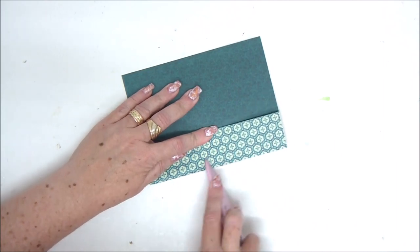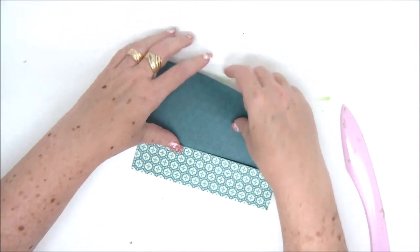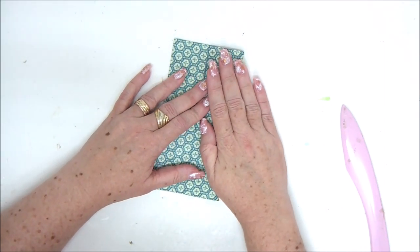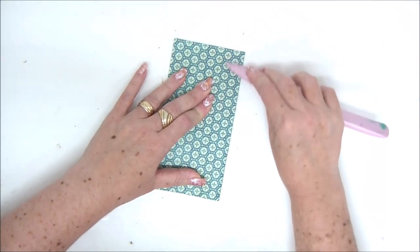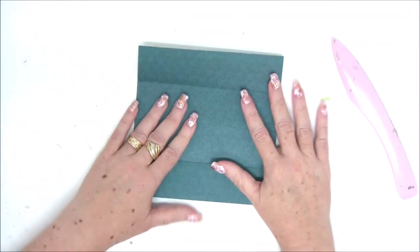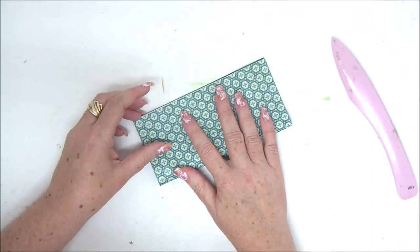So then we're going to fold the edge towards the center and the other edge towards the center as well and I always like to use a bone folder to burnish my folds, make them very crisp.